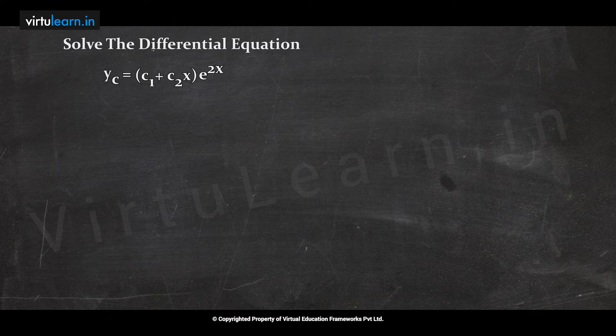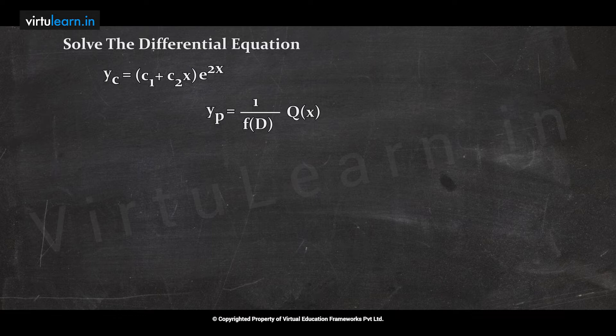The complementary function is now complete. For the second part, the particular integral is yp = [1/F(D)]·Q(x). Substituting all values: yp = 1/(D² - 4D + 4) · 8x²e^(2x)sin(2x).